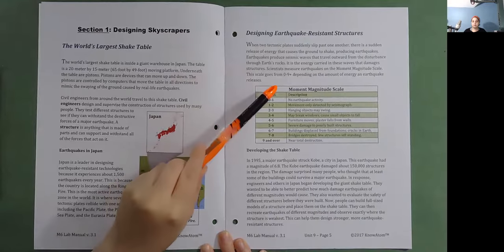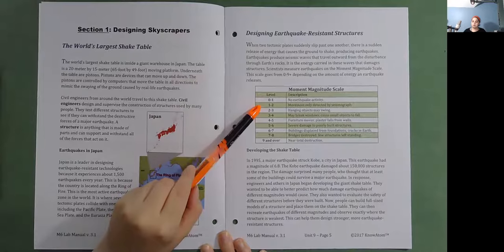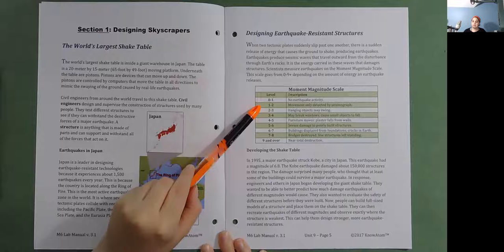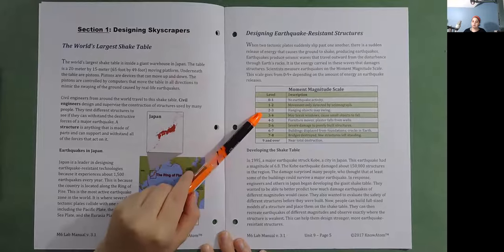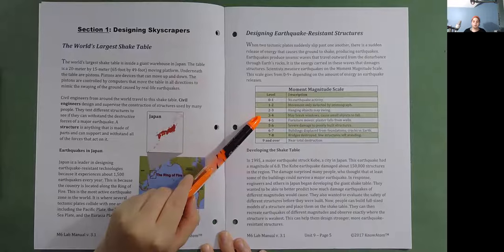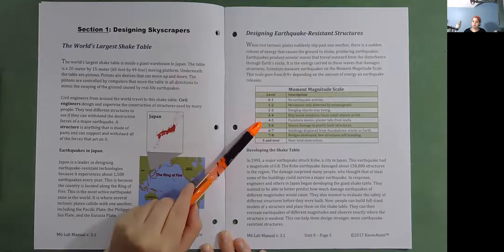Moment magnitude scale. Level 0 to 1: No earthquake activity. Level 1 to 2: Movement only detected by seismograph. Level 2 to 3: Hanging objects may sway. Level 3 to 4: May break windows, cause small objects to fall. Level 4 to 5: Furniture moves, plaster falls from walls.